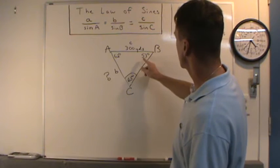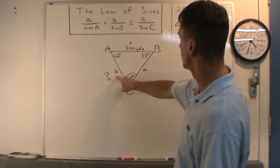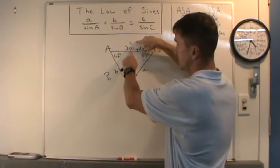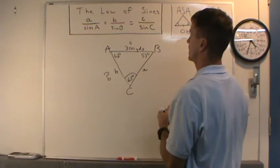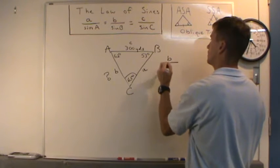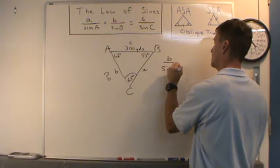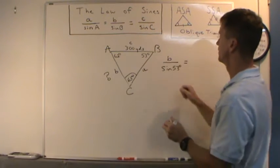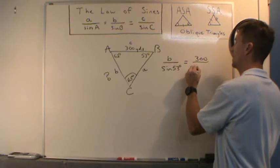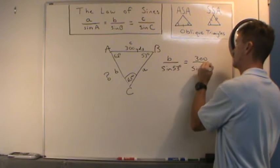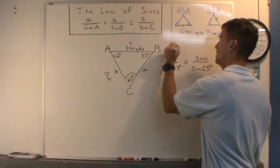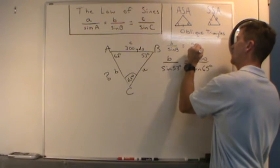I have 53 degrees for angle B and side b is what we're solving for. I won't use the A's in this problem because I don't know that distance. Since C equals 300 yards, I set up: length b over sine of B, which is 53 degrees, equals length C, which is 300 yards, over the sine of C, which is 65 degrees.